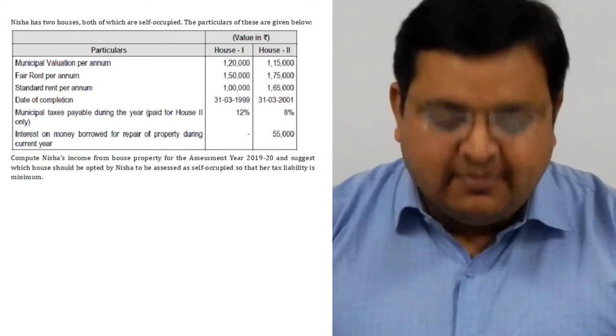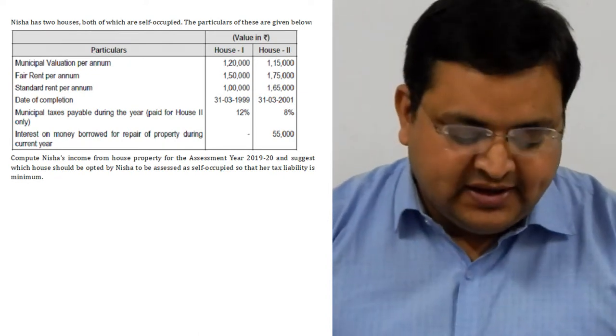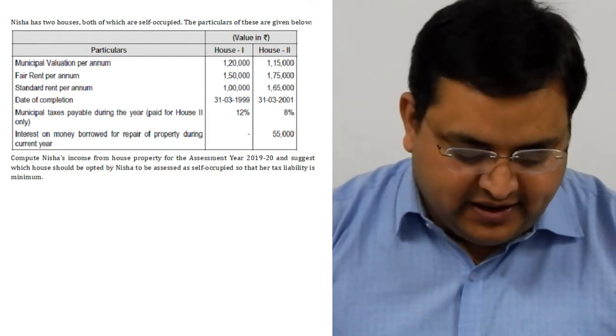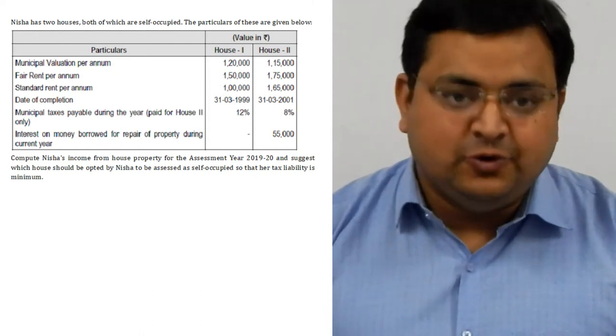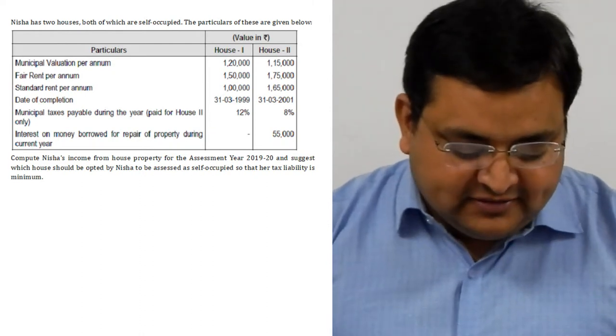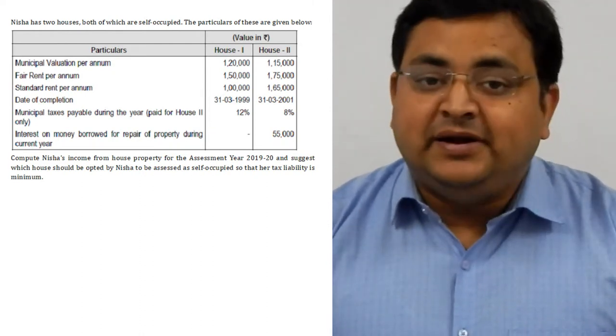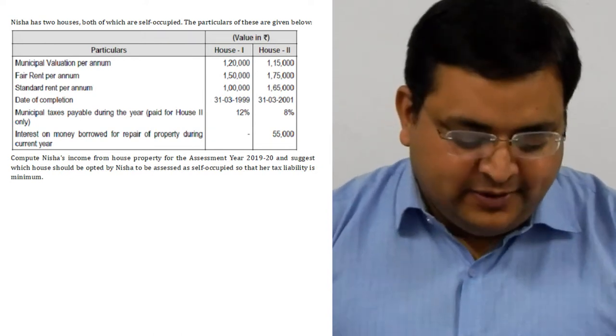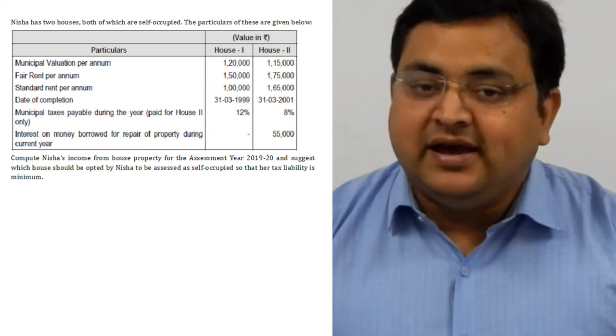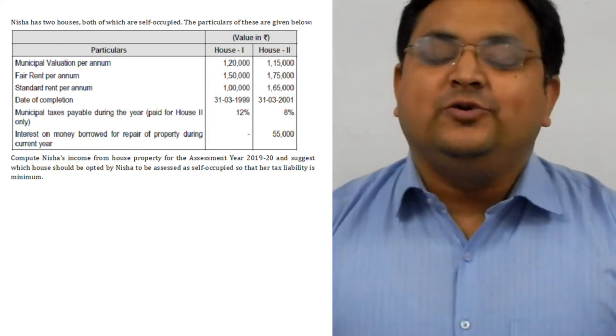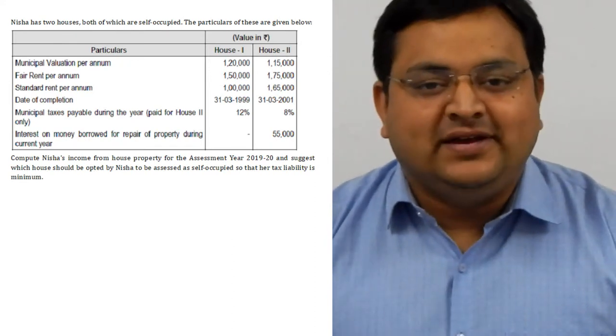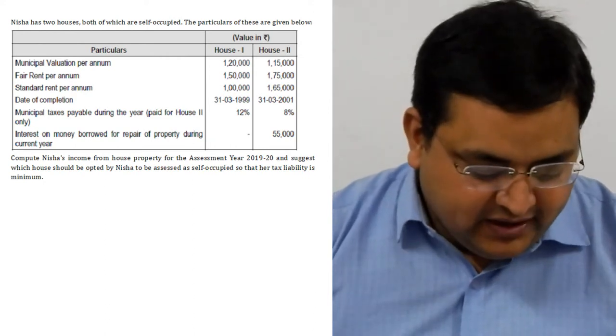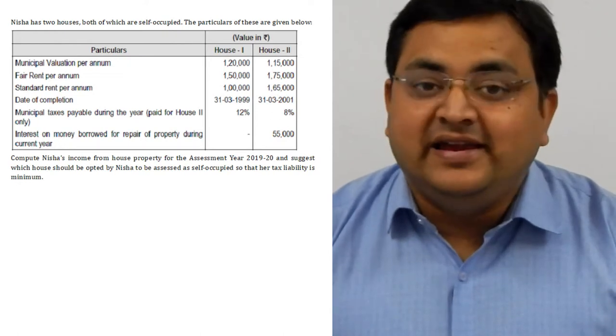Municipal value per annum for house 1 and house 2 is given. Fair rental value is given. Standard rent per annum is given. Date of completion of the house. Municipal taxes payable during the year - payable is written, not paid. Interest on money borrowed for repair, please underline, repair of property during the current year.